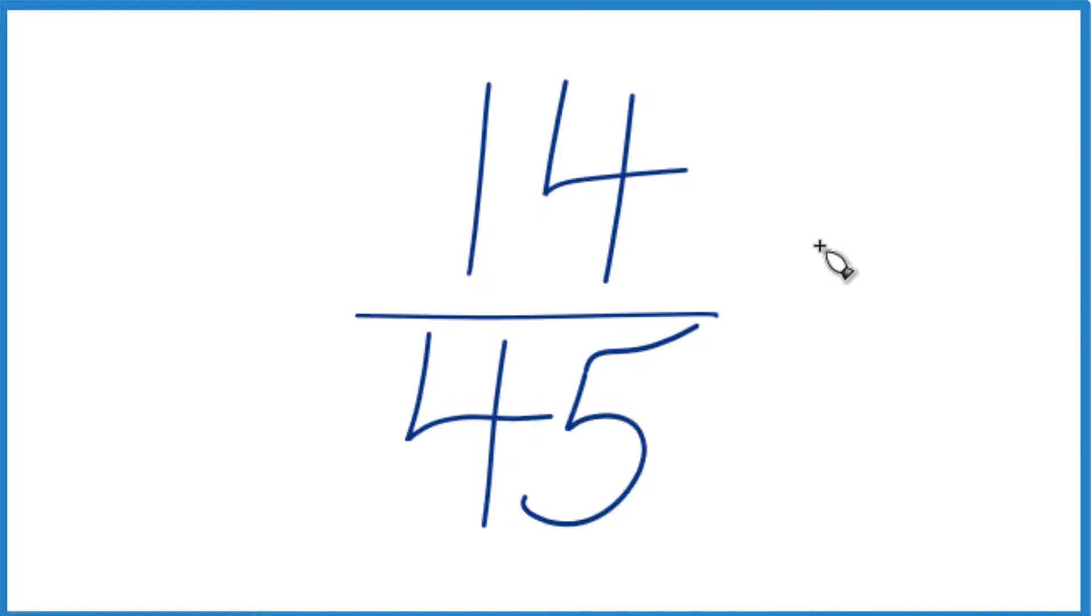So the way we do this, we want to find something that goes into 14 and 45 evenly. So as I look at this, I'm trying to find something that goes into both 14 and 45 evenly. But there aren't any numbers that go into both 14 and 45 evenly, other than 1.